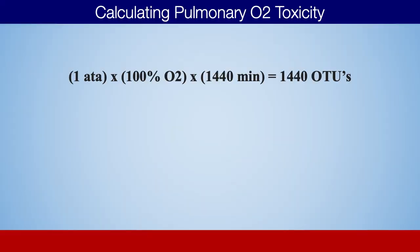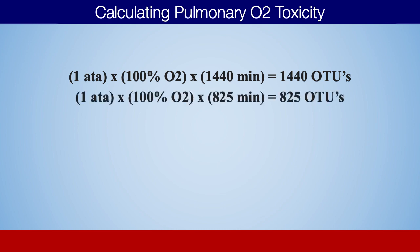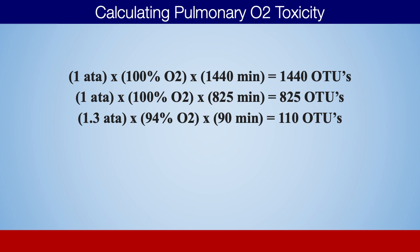Knowing the 825 threshold and calculating your hyperbaric sessions, you can see how close patients may or may not be to that exposure. For example, at one atmosphere breathing 100% oxygen for the entire day, that's 1,440 oxygen tolerance units. Breathing 100% oxygen at one atmosphere for 825 minutes gives you 825 oxygen tolerance units. At 1.3 atmospheres — the pressure of a soft chamber — breathing 94% oxygen for 90 minutes: 1.3 times 0.94 times 90 equals 110 oxygen tolerance units.